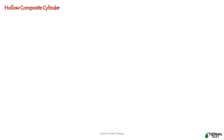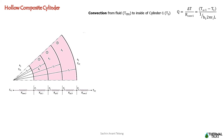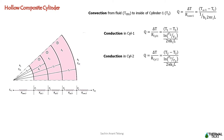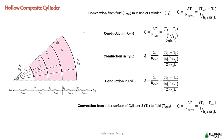Now we shall analyze heat transfer through a composite cylinder. There occurs convection at the inner surface of cylinder 1, then conduction within cylinder 1, subsequently conduction in cylinder 2, conduction in cylinder 3, and finally convection at the outer surface of cylinder 3.